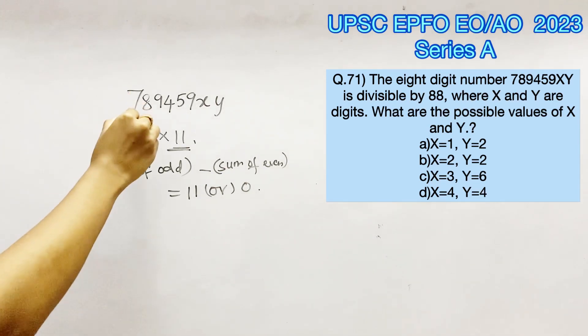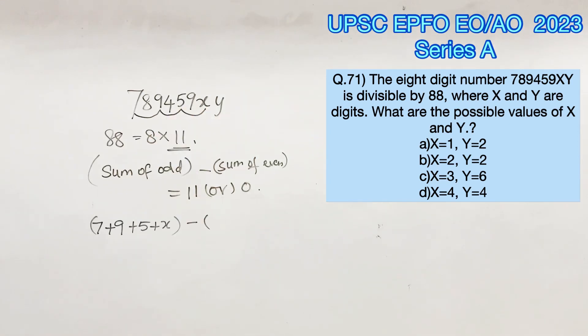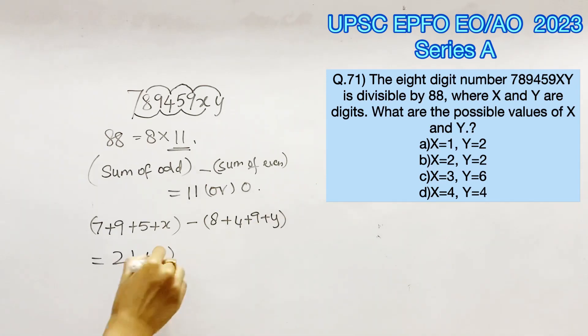the digits in the odd places are 7, 9, 5 and x. The digits in the even places are 8, 4, 9 and y. Adding these up, we get 21 plus x minus 21 plus y.